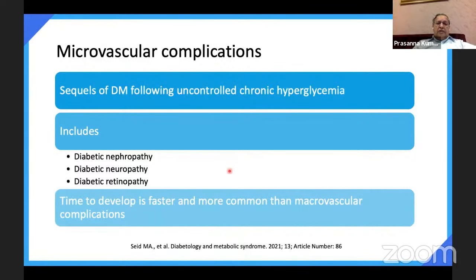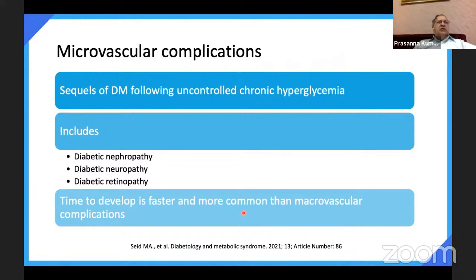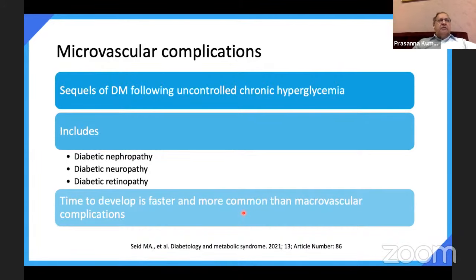Regarding microvascular complications — the sequelae of uncontrolled hyperglycemia — nephropathy affects kidneys, neuropathy affects peripheral nerves, and retinopathy affects the fundus. They typically develop after 10 to 15 years of uncontrolled diabetes. Regarding neuropathy, there are two types: acute metabolic neuropathy, when blood sugar is 400 to 500 — as soon as diabetes is controlled, tingling, numbness and burning disappear. The second is chronic bilateral symmetrical neuropathy with longer diabetes duration. By 10 years, nearly 80% have neuropathy; by 20 years, 90% will have neuropathy.